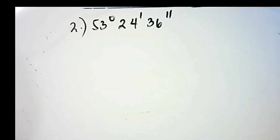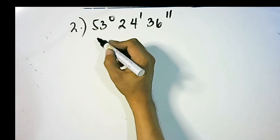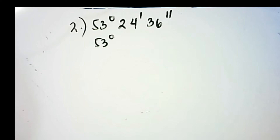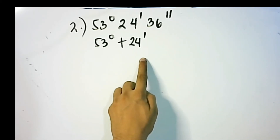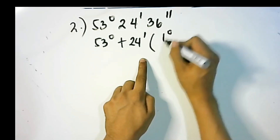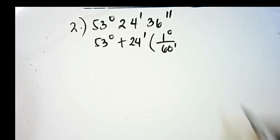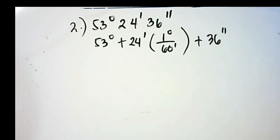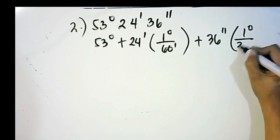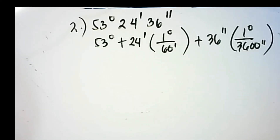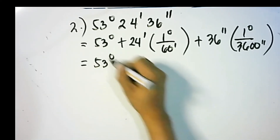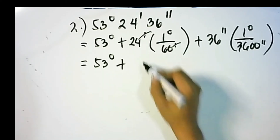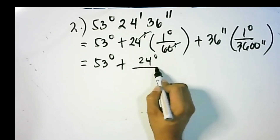We need to convert the DMS form into decimal degrees. First, simply copy 53 degrees, plus 24 minutes. We need to convert these minutes into degrees by multiplying by 1 degree over 60 minutes, plus 36 seconds multiplied by 1 degree over 3,600 seconds to convert to decimal degrees. Then we have 53 degrees, plus we cancel both minutes, giving us 24 degrees over 60.